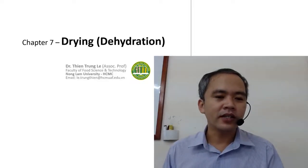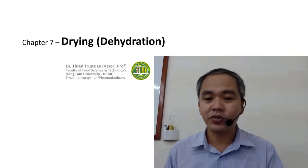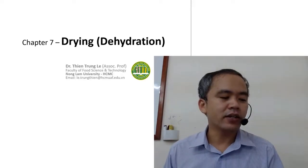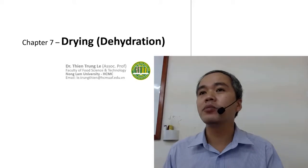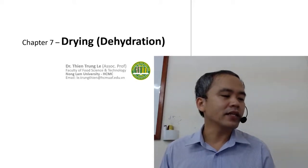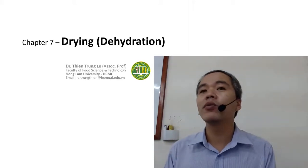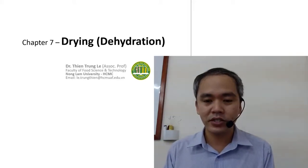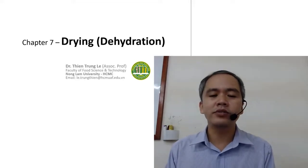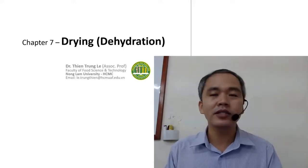Today we discuss Chapter 7: Drying. Drying is a very important unit operation in food processing to make the product dry and more stable for storage. Especially for food, we do drying to reduce the water content.